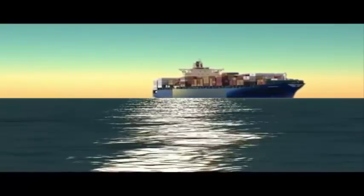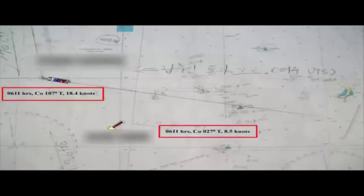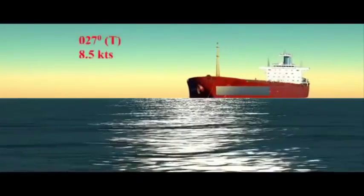It was slight sea with good visibility. At 0611 hours, officer on watch on ABC observed MV XYZ 3 points on starboard bow at 4.2 miles, which was steaming on 027 degrees true at 8.5 knots.